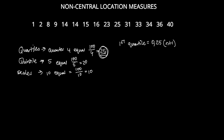For the first quintile we would divide 20 by 100 to get 0.2, then multiply by n plus 1. Continuing with the first quartile: our sample size is 15, so that's 0.25 multiplied by 15 plus 1, which is 0.25 multiplied by 16, giving us 4.